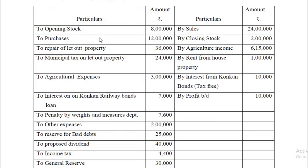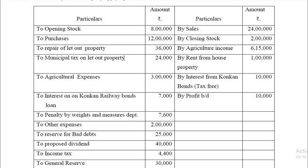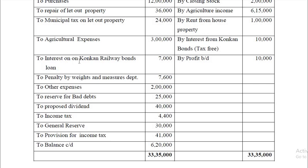Let us see the treatment of items while computing business income. Opening stock and purchases are part of business income. Repairs of let-out property relate to income from house property, so this is disallowed and should be added back. Municipal taxes also relate to income from house property — to be added back. Agriculture expenses relate to exempt agriculture income, so they are also not allowed and must be added back. Interest on Concam Railway Bonds is tax-free, so the expense is also not allowed and should be added back.